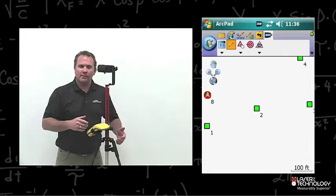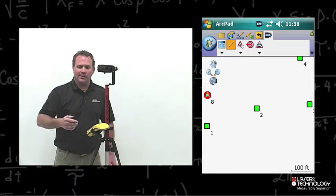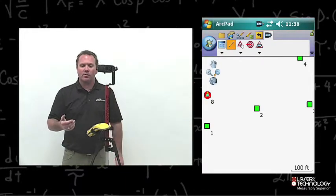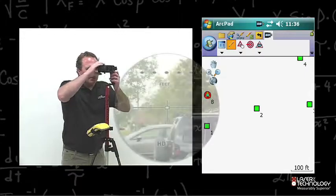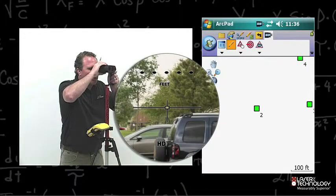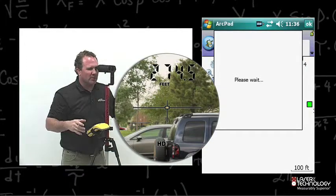Now I'm at my last traverse point and I need to close my traverse. I need to take a measurement back to my origin. Go ahead and take a last measurement shot back to the origin, which actually closes my traverse.